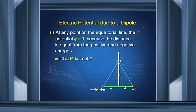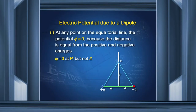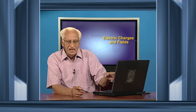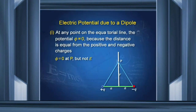This is a dipole: plus Q and minus Q. P is a point on the equatorial line at a distance r from the center of the dipole. We find the potential at P due to +Q, which is Q divided by that distance, and due to −Q it is −Q divided by that distance. Since these two distances are equal and the charges are opposite, the potential at P equals zero. But the electric field at P, as found in the last lecture, is not equal to zero — the electric field points in this direction, whereas the potential is zero.